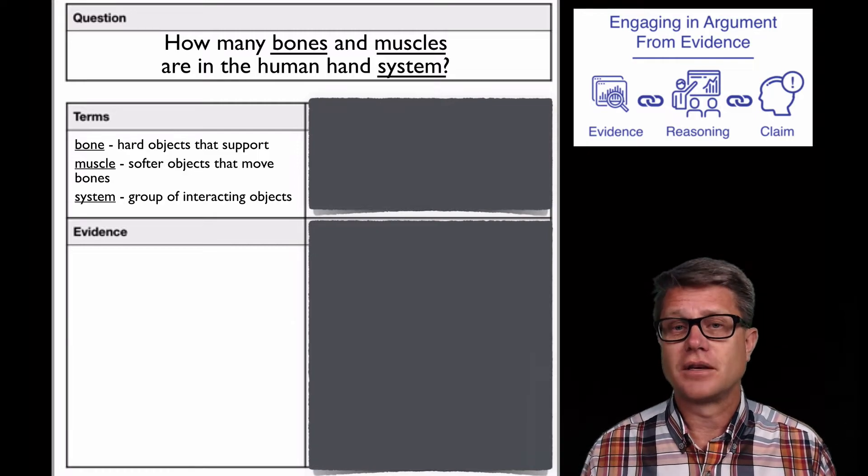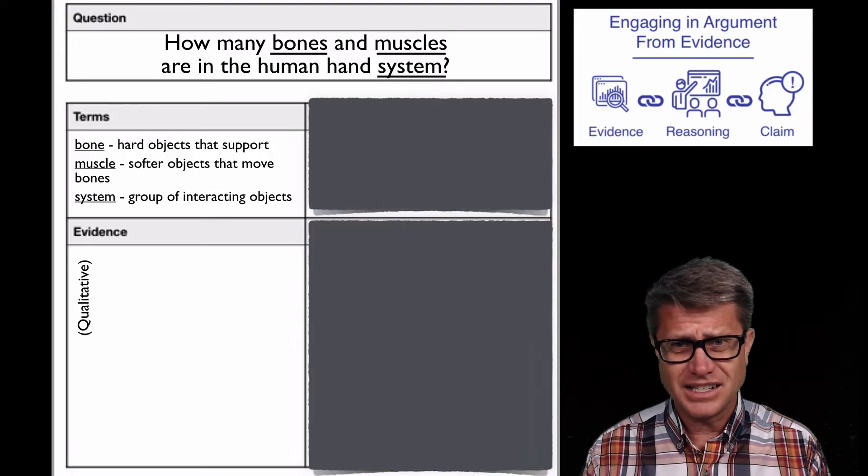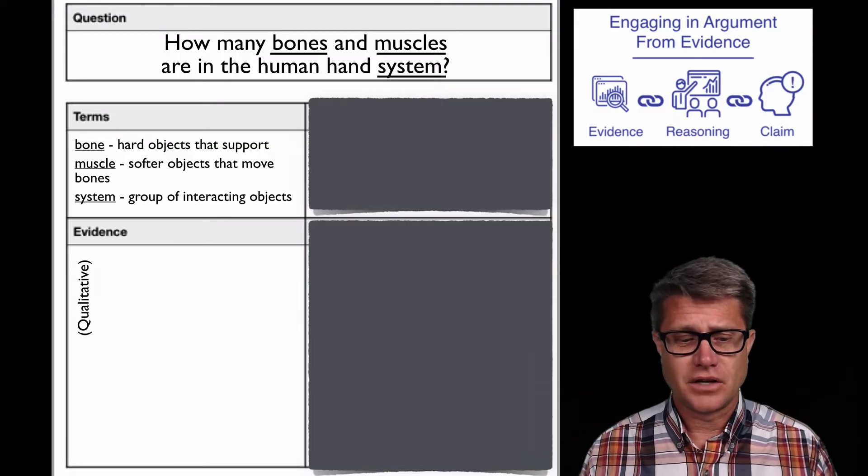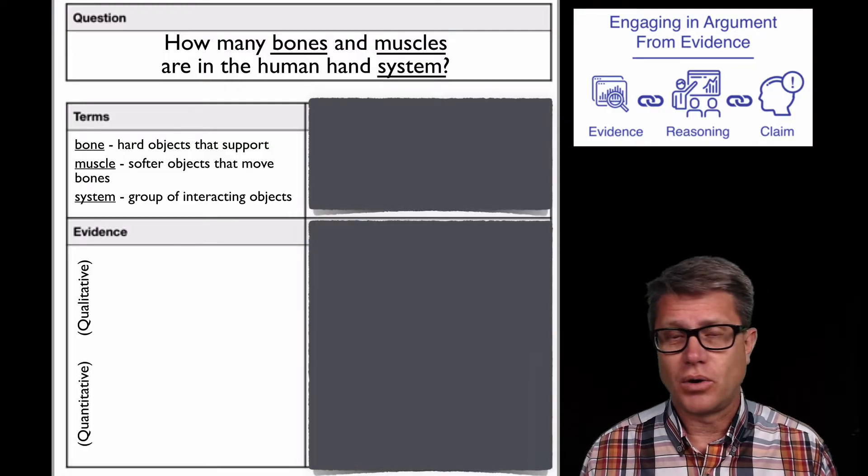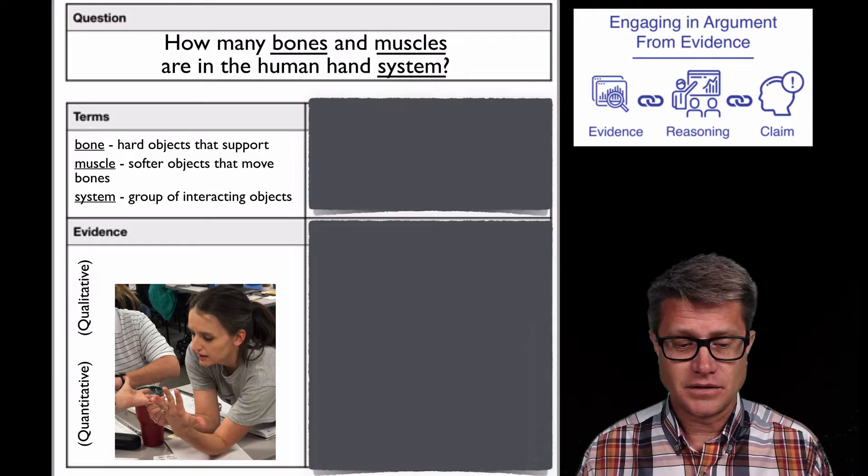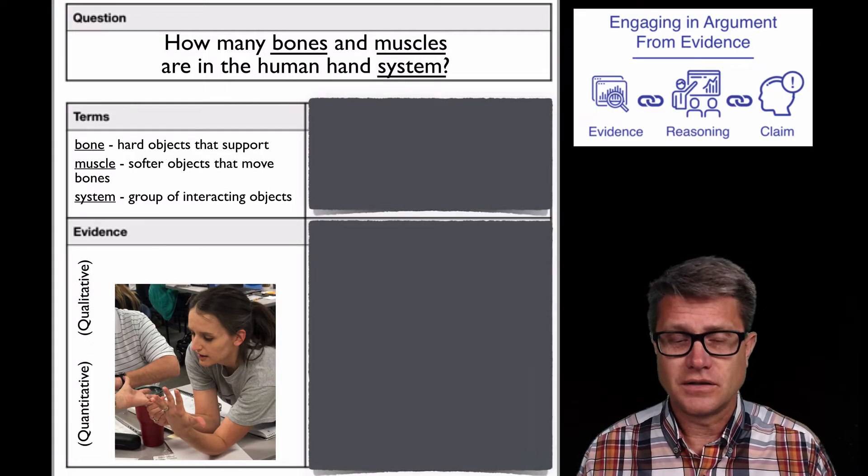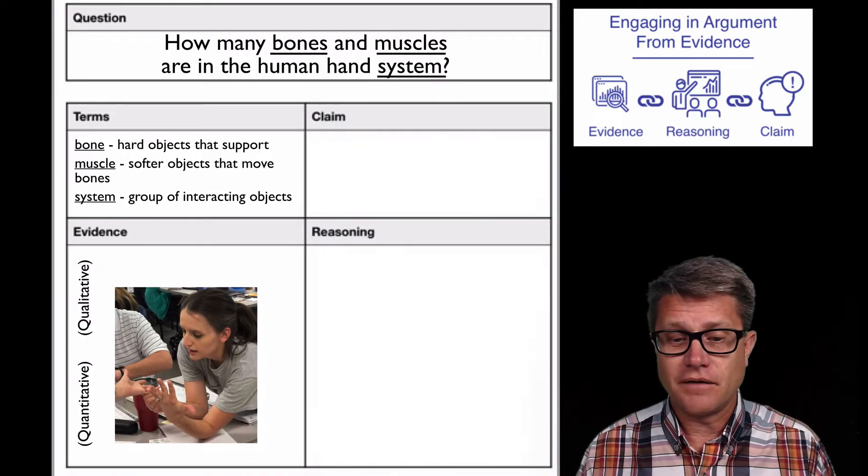Once we have that, then you as a teacher let them go. You maybe give them an indication that evidence is what you see, what you're sensing or what you're observing, not necessarily seeing. And that evidence could be qualitative or quantitative. But then you just let them go and they're going to gather that evidence. This is a picture of some elementary teachers doing this argumentation on the hand, trying to figure out what's on the inside.